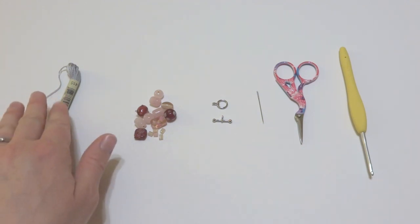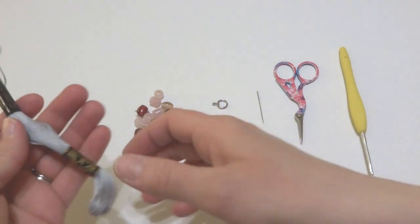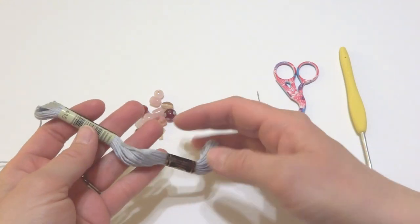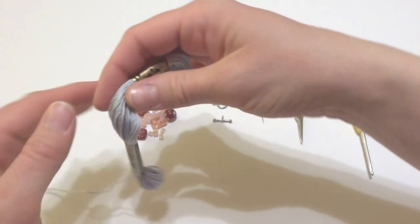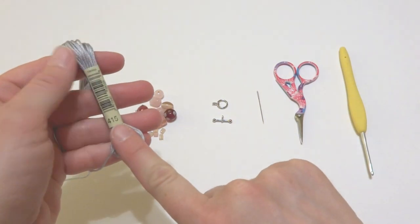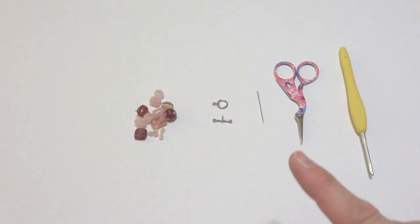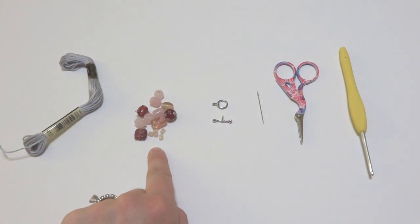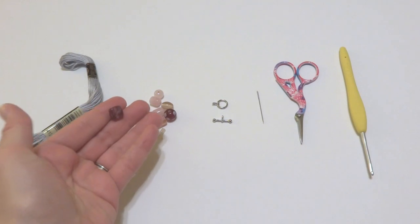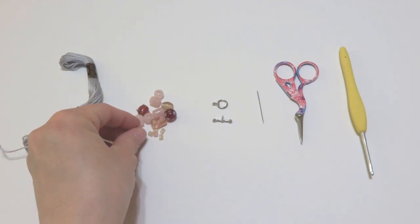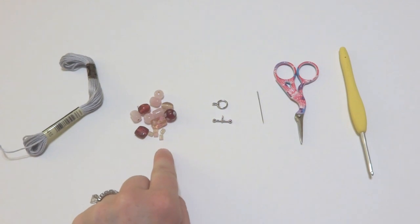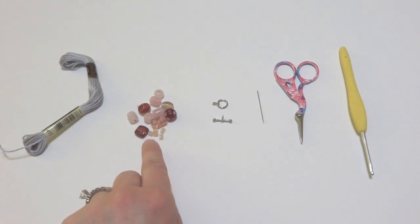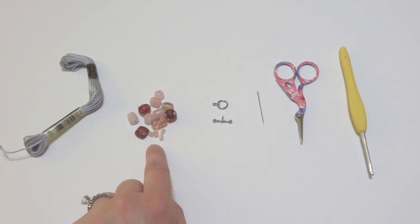For this project, you'll need some embroidery floss. I used DMC, just regular embroidery floss, and I chose a soft silvery color to make it look like metal. This is a 415 color. You'll also need some beads. I chose glass because they come in a lot of really pretty shapes, textures, and colors.